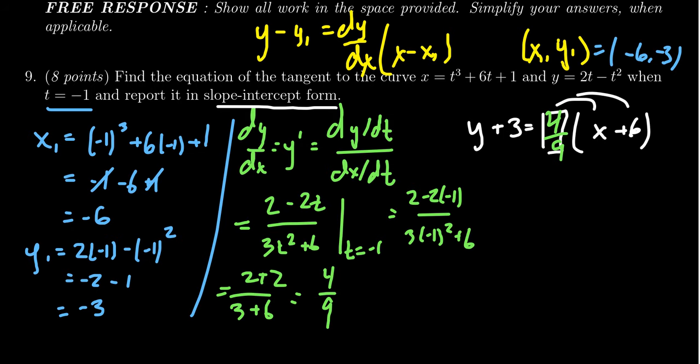Distribute the 4 ninths through. We'll get y plus 3 equals 4 ninths x plus you're going to get 4 times 6 over 9. It's better to reduce before you multiply because 6 and 9 have a common factor of 3. So 3 goes into 6 two times, it goes into 9 three times. And so we're going to have 8 thirds there.